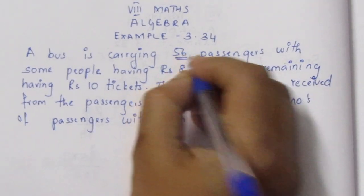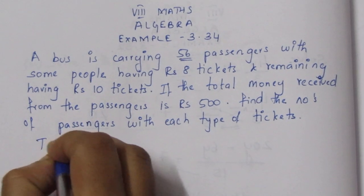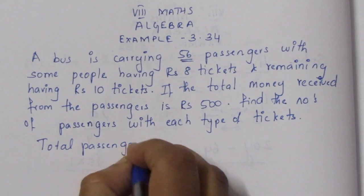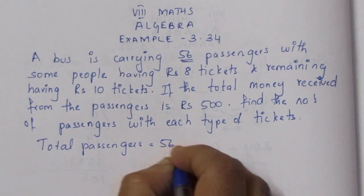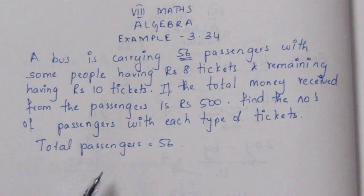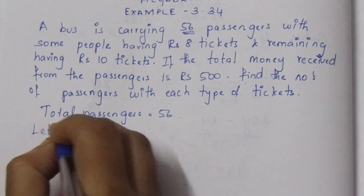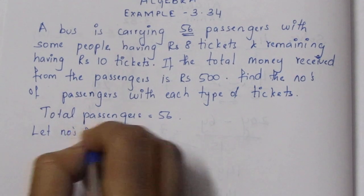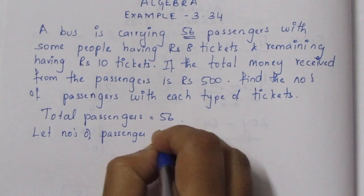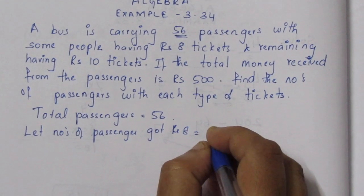Total passengers is equal to 56. Some have Rs.8 tickets and the balance have Rs.10 tickets. Let the number of passengers with Rs.8 tickets be X.